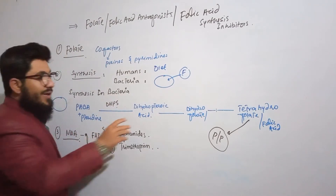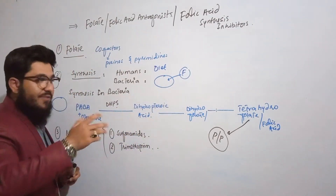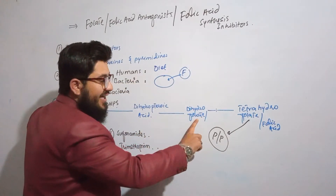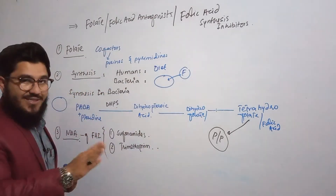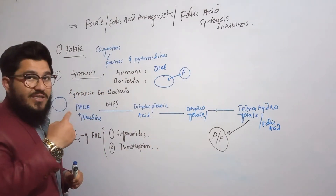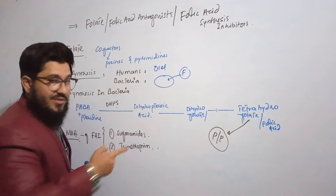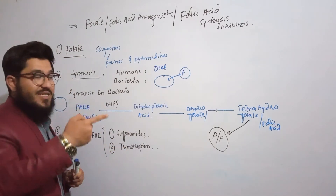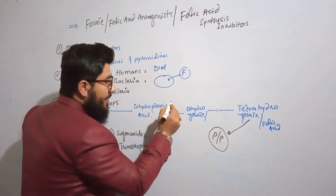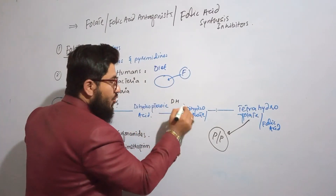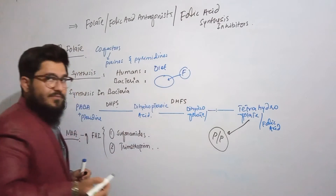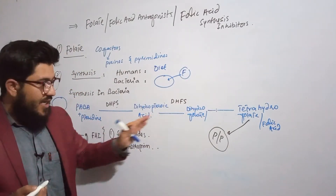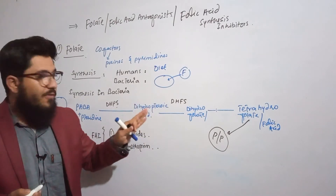The next product is dihydrofolate, also known as dihydrofolic acid. The specific enzyme that synthesizes this is, again named from its product — since it is synthesized, the enzyme will be a synthase. So the second enzyme is dihydrofolate synthase, which is responsible for synthesizing dihydrofolate or dihydrofolic acid.